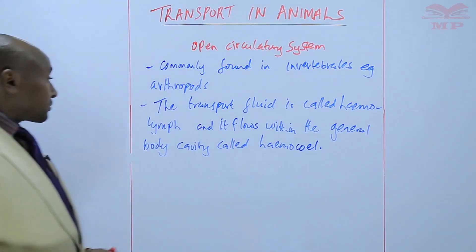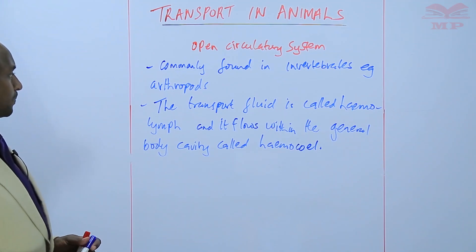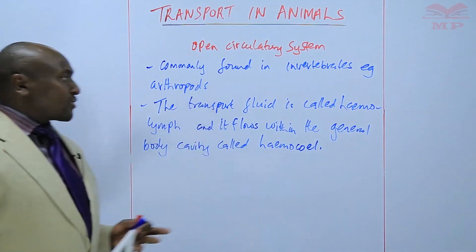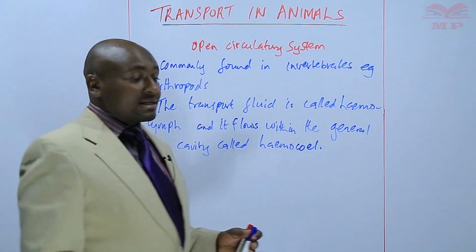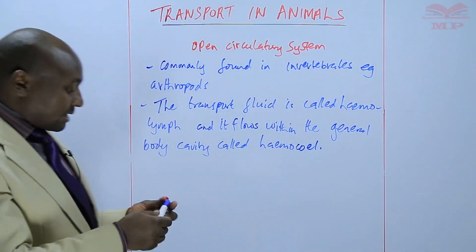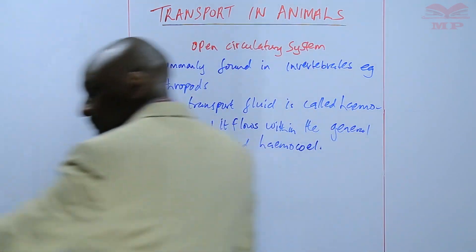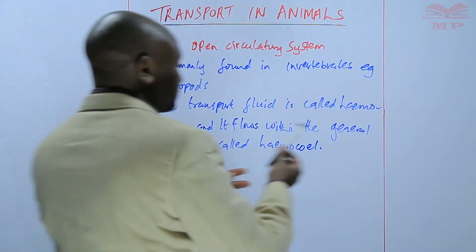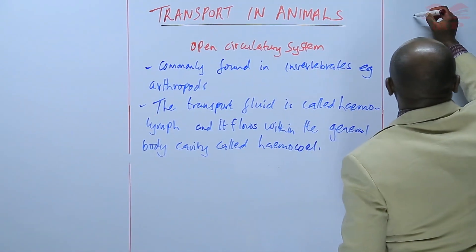Now I would want us to have an example, because we said that it is common in arthropods — for instance, in insects. So we'll take an example of an insect such as a cockroach and have a simplified diagram.